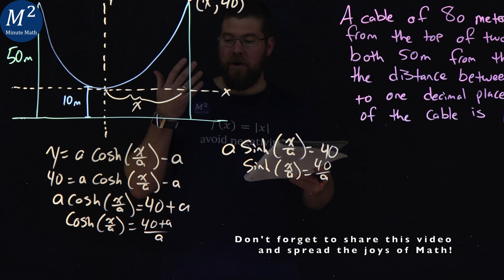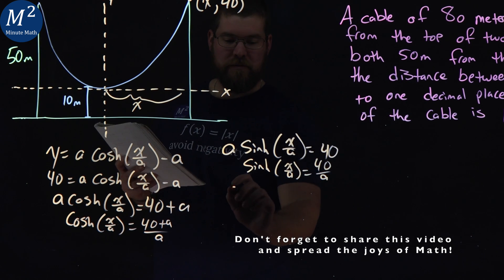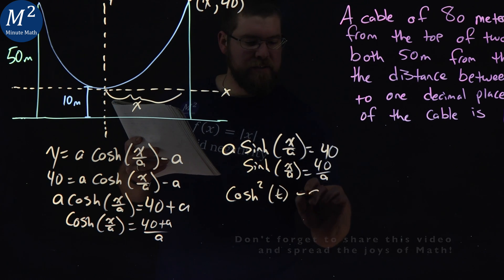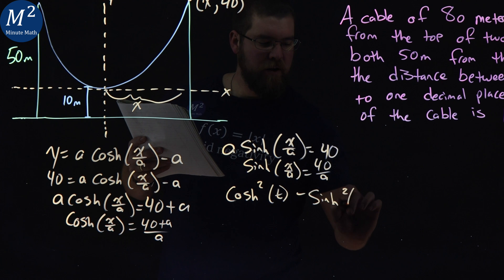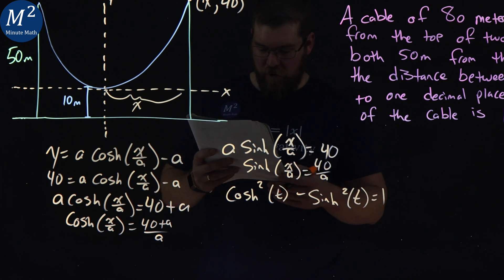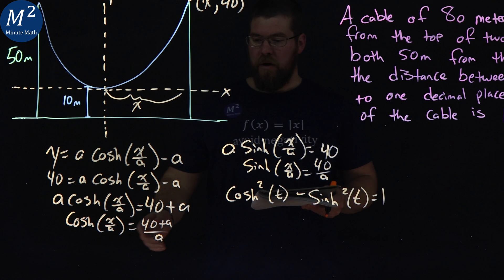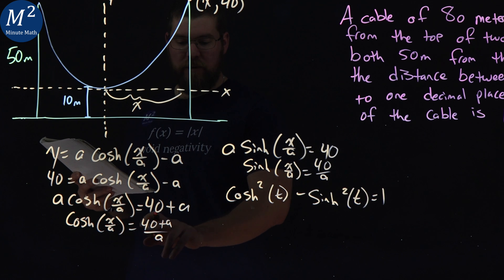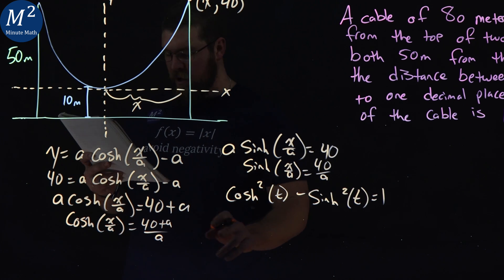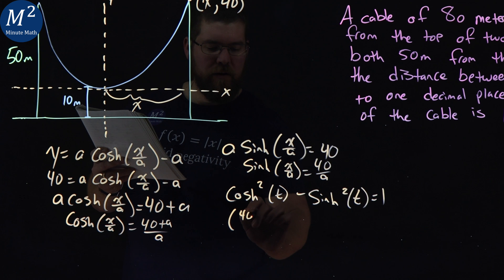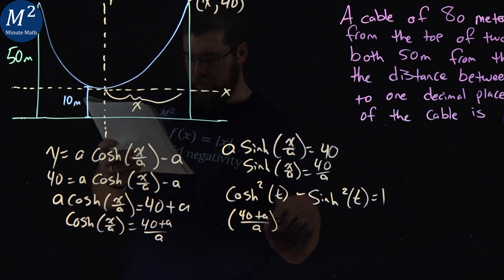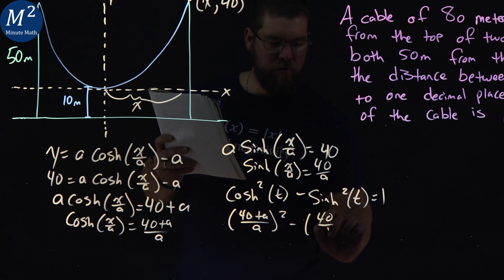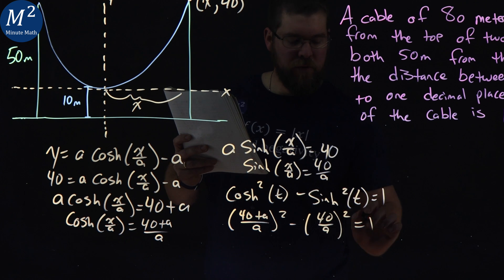Now from here, we can use some laws that we know. And we know that the cosh squared of a variable t minus a sinh squared of a variable t is equal to 1. So plugging that in, we can replace that. And we have since cosh of x over a is equal to 40 plus a over a, we can rewrite this to be 40 plus a over a squared minus next part here. This becomes 40 over a squared. And that's going to equal 1.